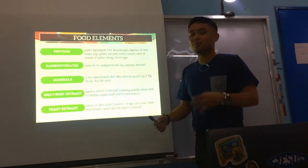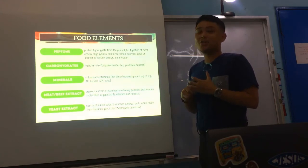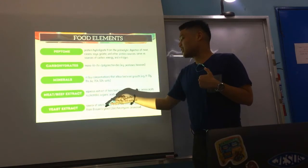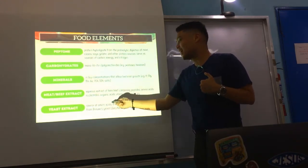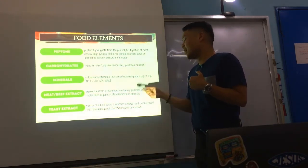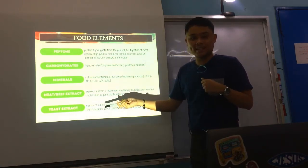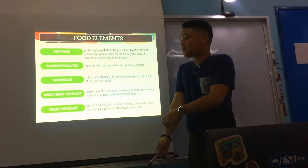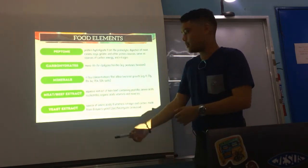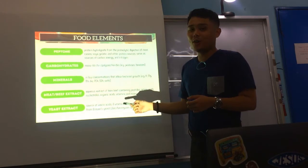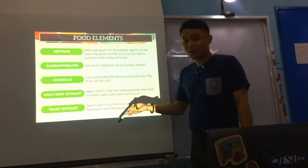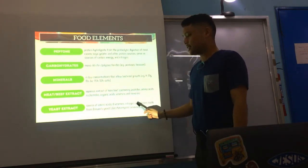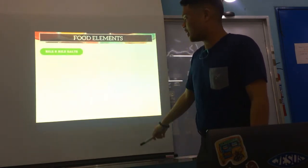Next, you have yeast extract, because there are some bacteria that love yeast. Yeast extract is a source of amino acids and B vitamins. The yeast typically used is brewer's or baker's yeast — that is your Saccharomyces cerevisiae. Brewer's yeast is used to ferment alcohol, while baker's yeast is used for raising dough. Please take note of Saccharomyces cerevisiae — this is common knowledge.